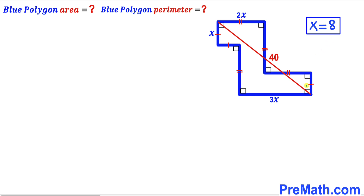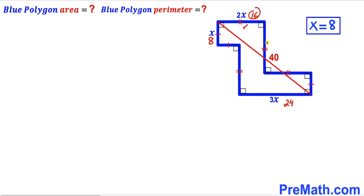Now we substitute x = 8: 3 times 8 gives us 24, 2 times 8 gives us 16, and x itself is 8. Making observations: since this side is 16, the congruent sides are all 16. And since this side is 8, the other congruent sides are 8 as well.